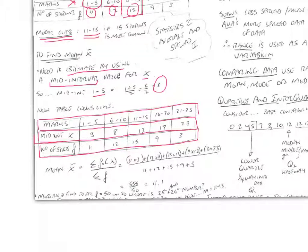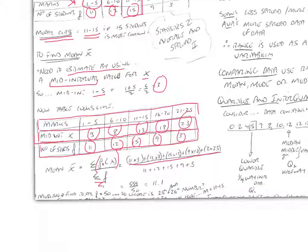To find the mean of this data, we sum f times x: eleven times three, plus twelve times eight, plus fifteen times thirteen, plus nine times eighteen, plus three times twenty-three. We divide that by the sum of the frequencies — eleven plus twelve plus fifteen plus nine plus three. So x-bar is equal to 555 divided by fifty, which equals eleven point one.